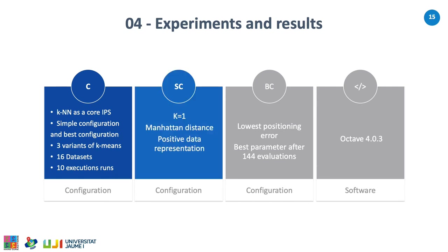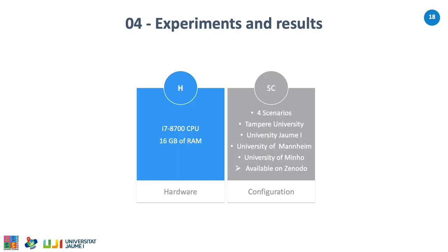The simple configuration used k equal to 1, Manhattan distance, and positive data representation. The best configuration stands for the hyperparameter configuration that reported the lowest positioning error for each dataset after evaluating 144 alternatives. The software used is Octave version 4. The hardware has the following characteristics: Core i7 CPU and 16 GB of RAM. The datasets were collected at the Tampere University, University Jaume I, University of Mannheim, and University of Minho. Supplementary materials with method implementations and dataset explanations are available in Zenodo.